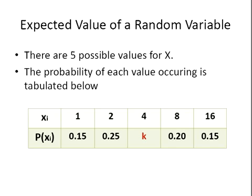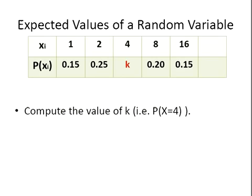1, 2, 4, 8 and 16. And the probability of each of these values is tabulated below. Now you notice that we're not given a probability for the outcome, the value 4. So we have to compute that first off.